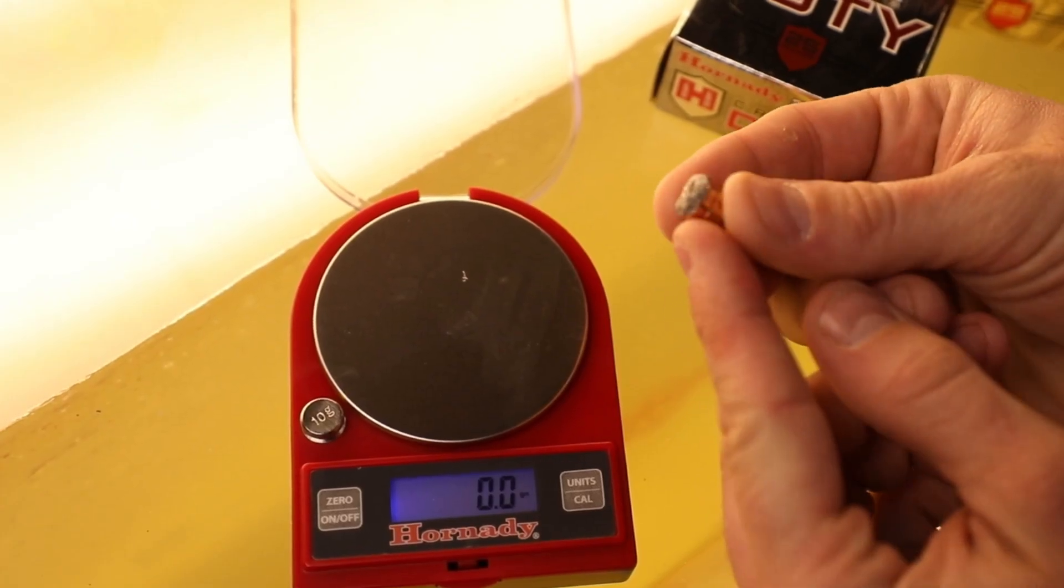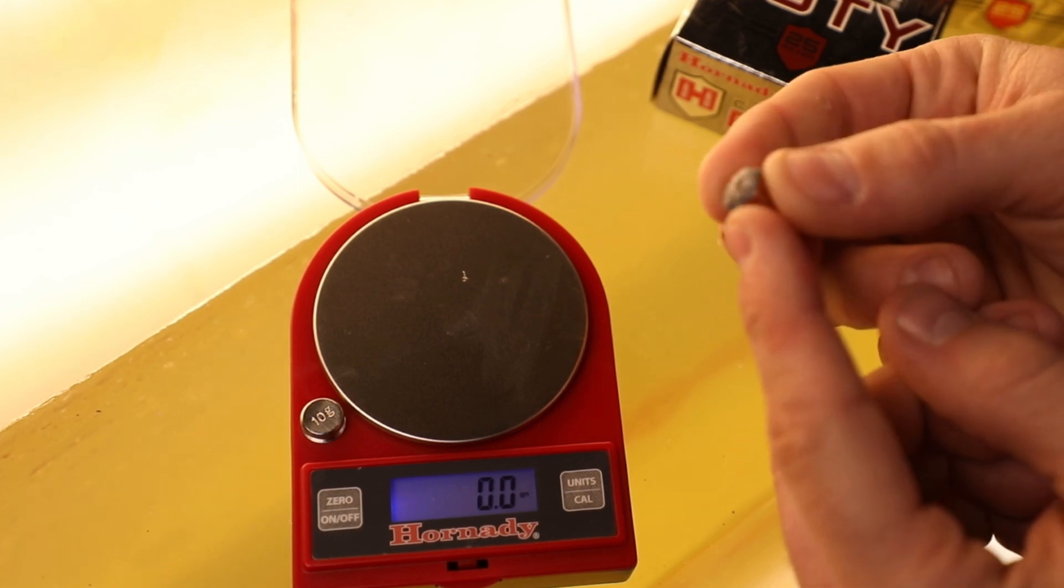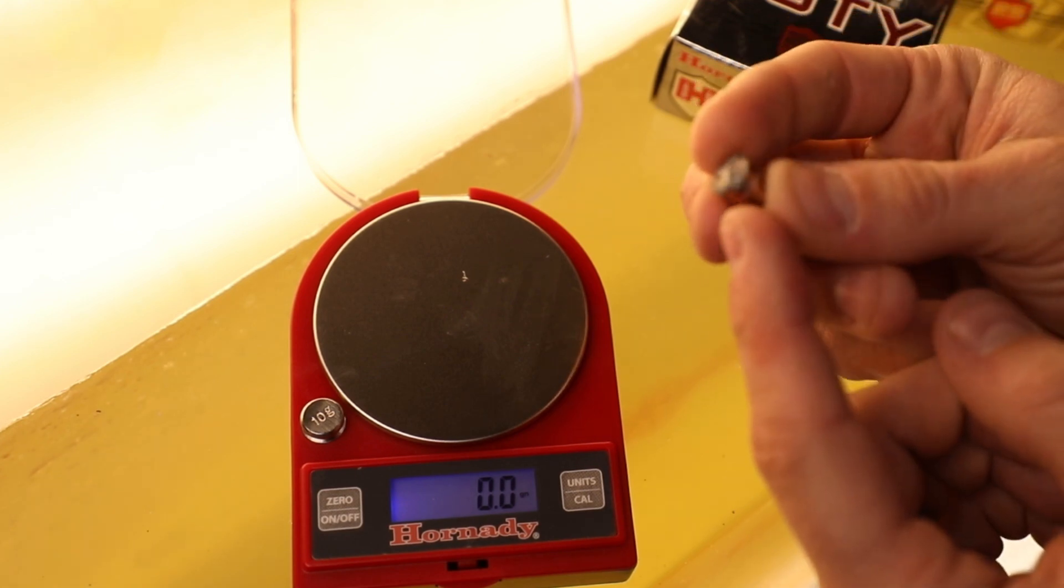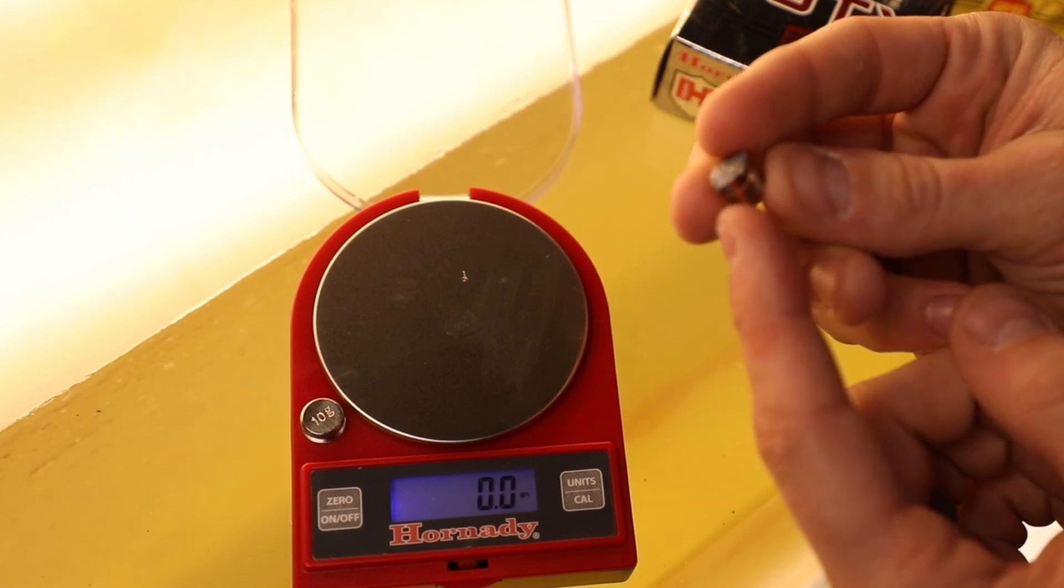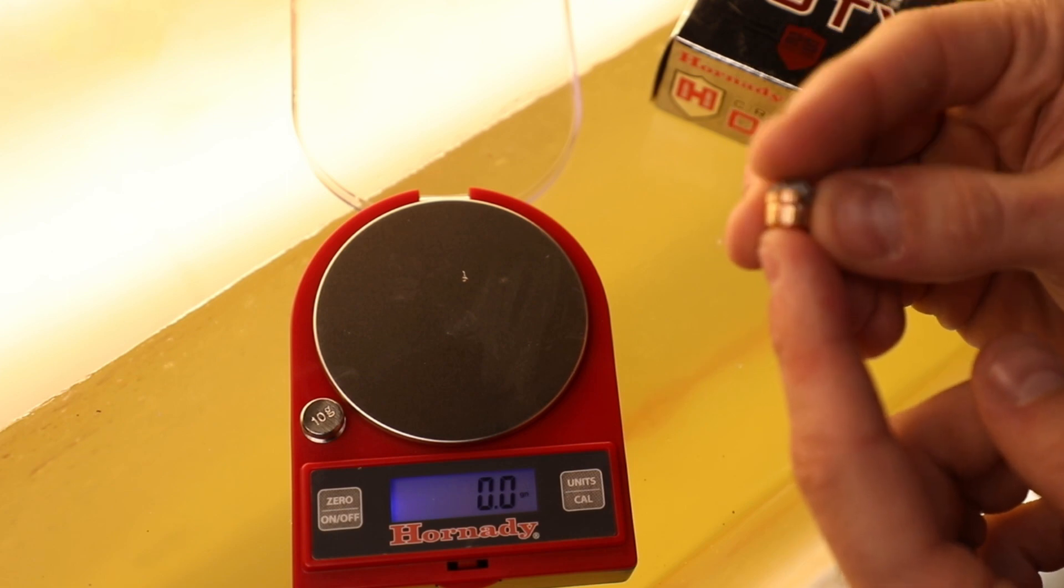As you can see the bullet sheared off right at the top cantalure as it came through the glass. So it entered the gel in this state and that allows for that deep penetration of 14 inches. Now through the glass barrier this bullet should retain about 65% of its weight.